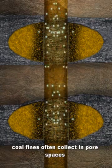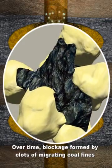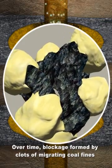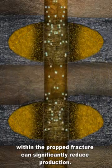coal fines often collect in pore spaces and are carried toward the wellbore. Over time, blockage formed by clots of migrating coal fines within the propped fracture can significantly reduce production.